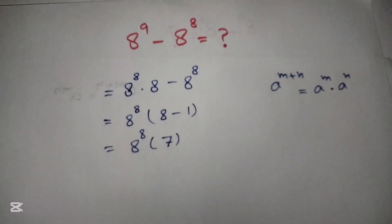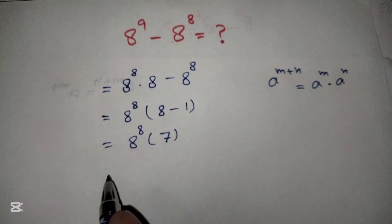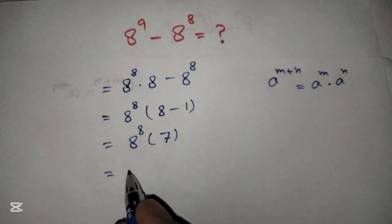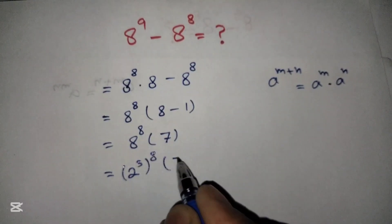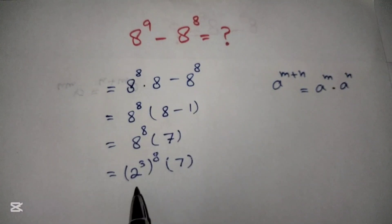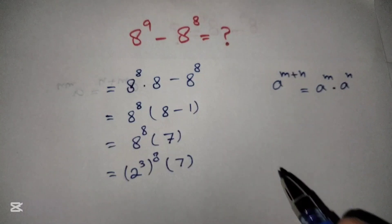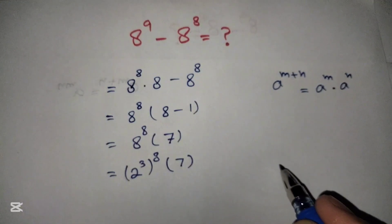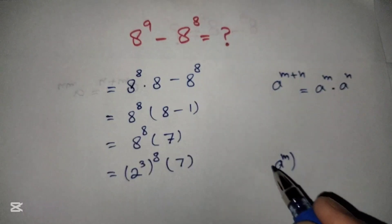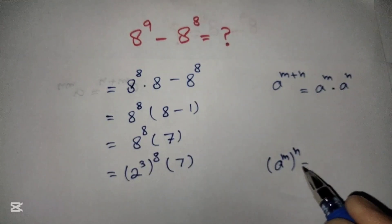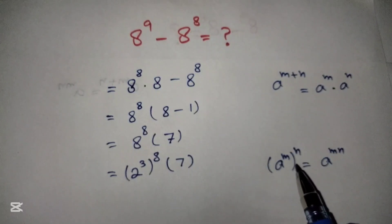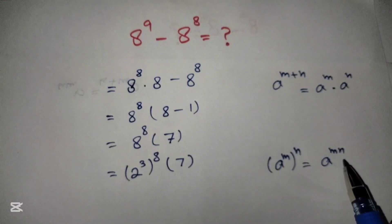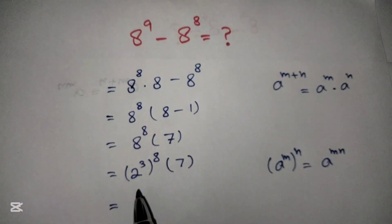Now we rewrite this in a simpler way: (2 raised to power 3) whole raised to power 8, into 7. Here we use the law of exponents again, which states that (a raised to power m) whole raised to power n equals a raised to power m×n — when power of a power occurs, both powers are multiplied.